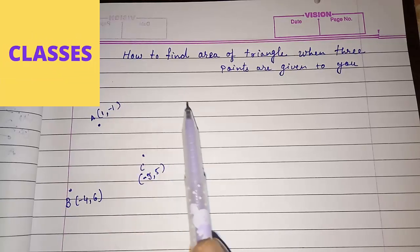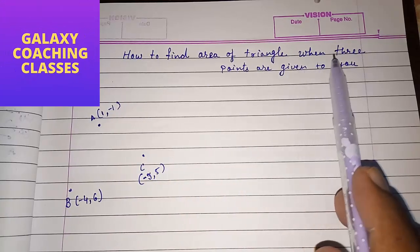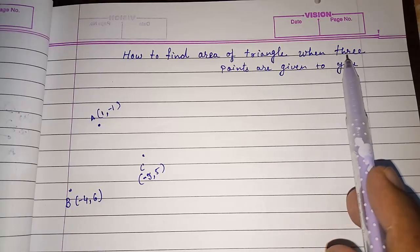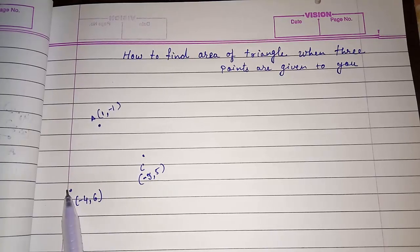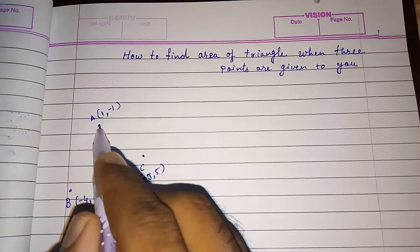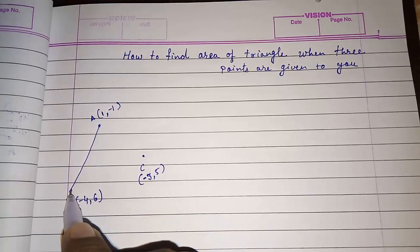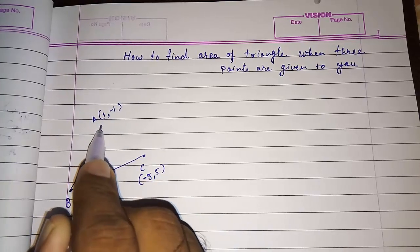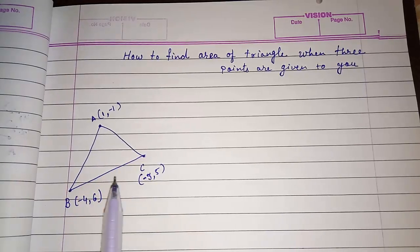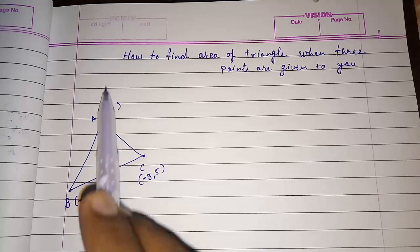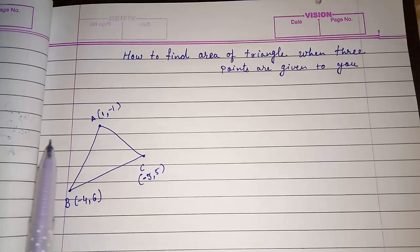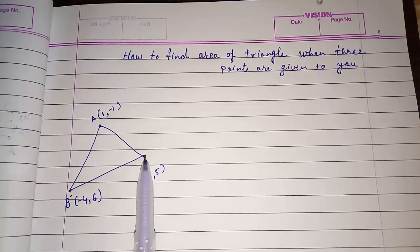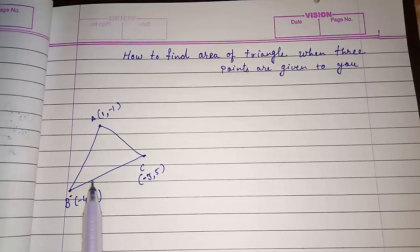Hello friends, today we are going to study how to find the area of a triangle when three points, or three coordinates, are given to you. You can see three coordinates — point A, point B, and point C — with their coordinates. We know that with these three coordinates we will get a triangle A, B, and C on the Cartesian plane. This is a coordinate geometry topic, and if we join the three coordinates we get a triangle.